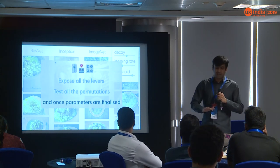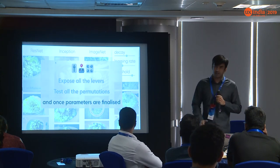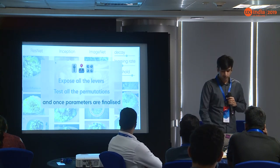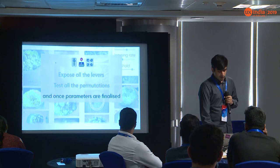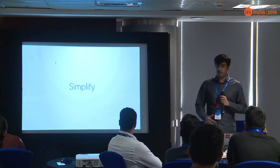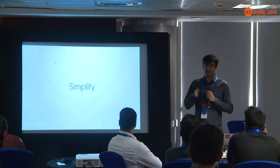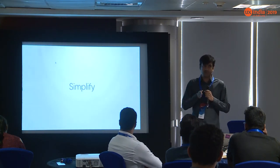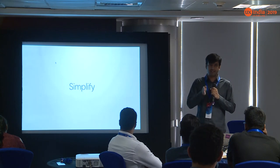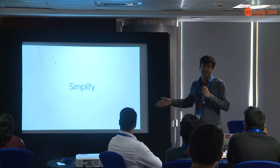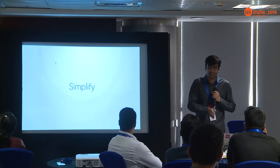Next, once the parameters are finalized, you have to make it productized — you simplify it. You decide that at this threshold, the model is performing best where it can distinguish between one biryani image versus the other.